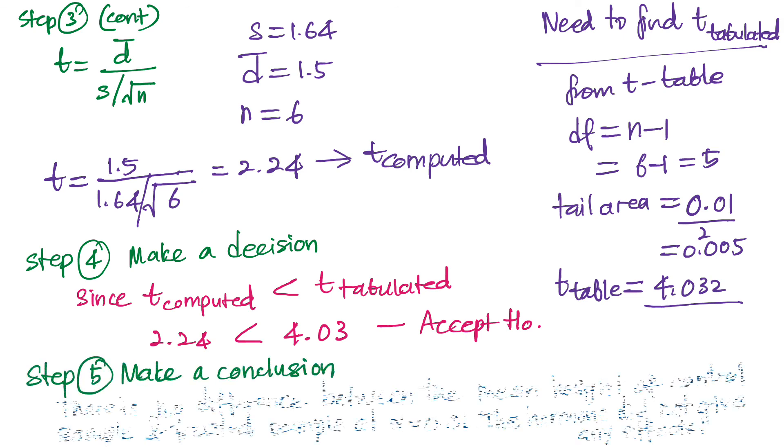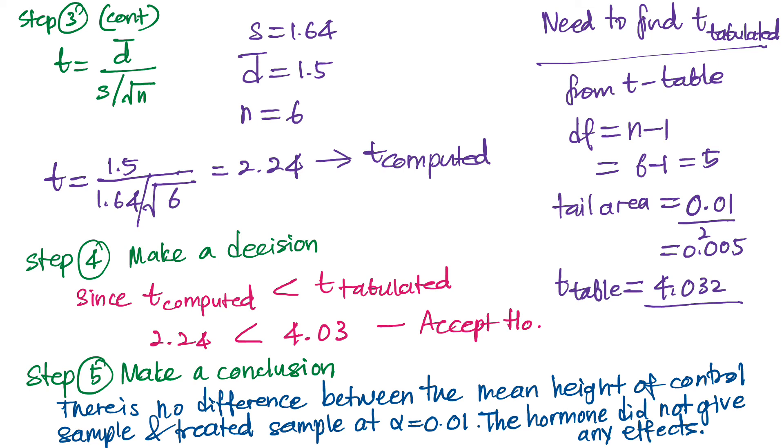Finally the conclusion can be written as there is no difference between the mean height of the control sample and the treated sample at alpha equal to 0.01. So we can also say that the hormone given to the plants did not give any effects in terms of their growth. So that answers the question in this problem.